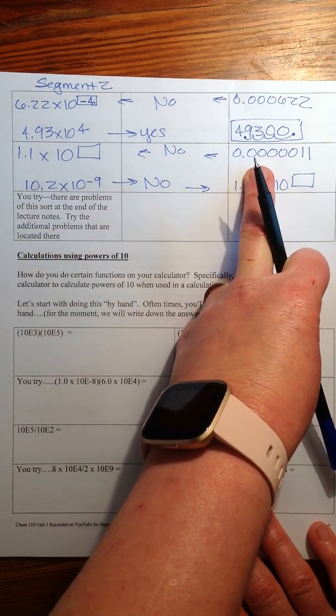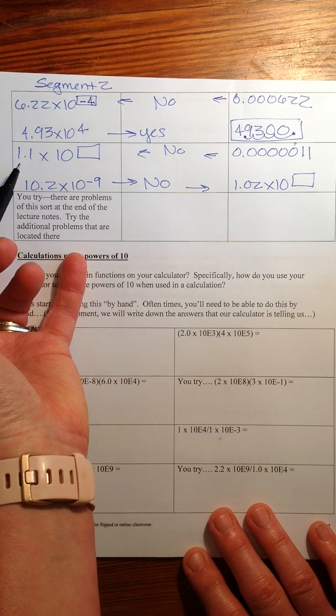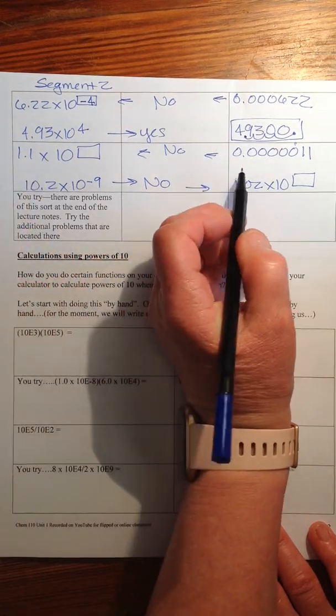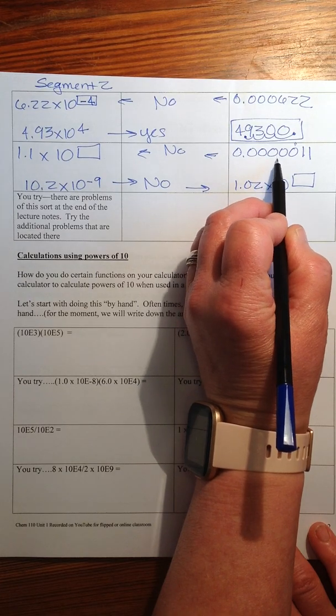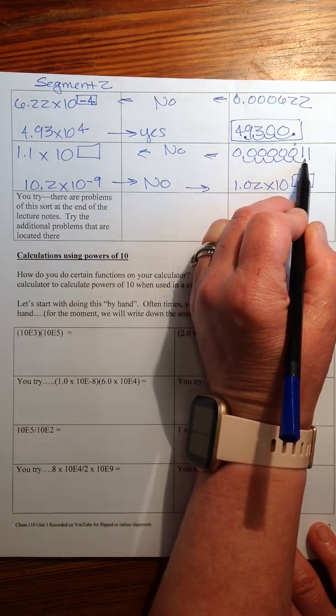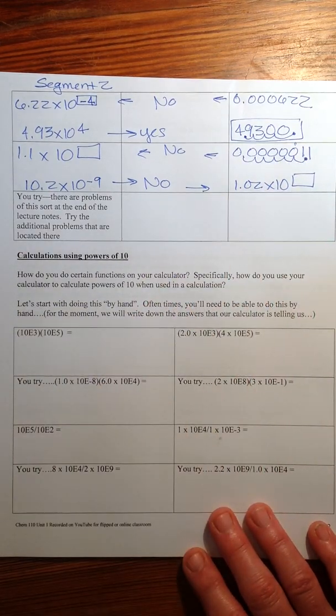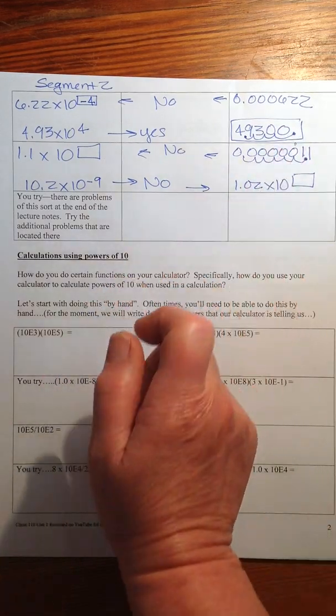This is not in scientific notation and you want this one here to be in the ones place. So what that means is that you're moving the decimal one, two, three, four, five, six places to the right in order to get the decimal to put the one in the ones place.